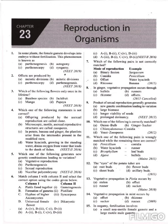Offset means it is a type of asexual reproduction in which lateral, long and slender internodes are formed from the axillary buds of the aquatic plant. On detachment, the offset results in a new plant. Examples for the offset group of asexual reproduction are Eichhornia and Pistia.